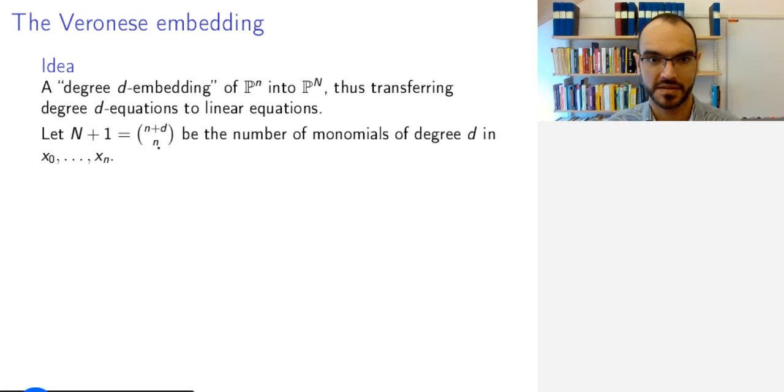We can call them f_0 to f_N. So these f_0 to f_N are very concrete polynomials, each of them is a monomial of degree d in these x_0 to x_n.